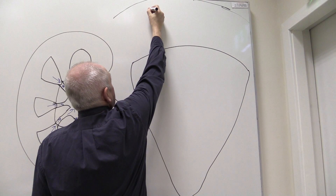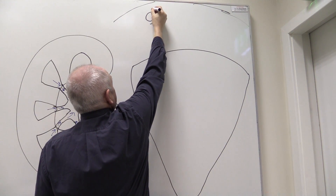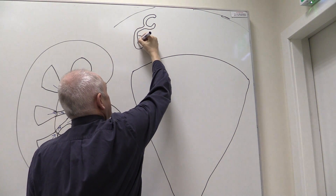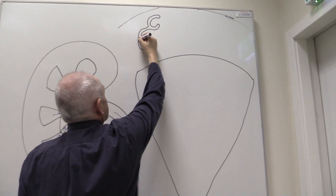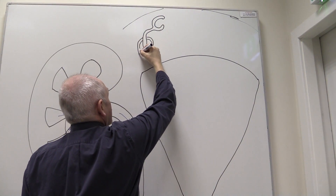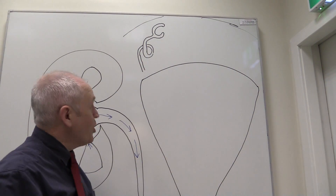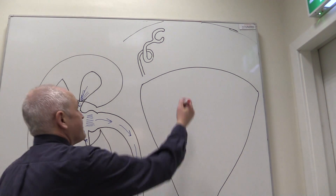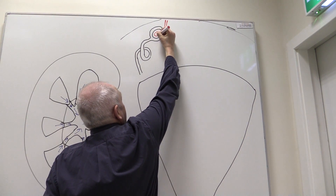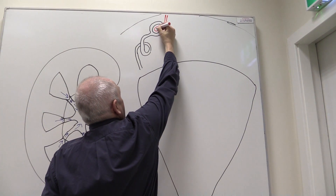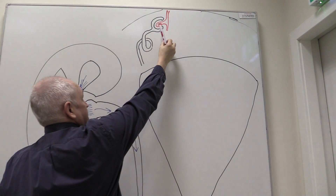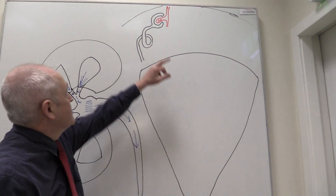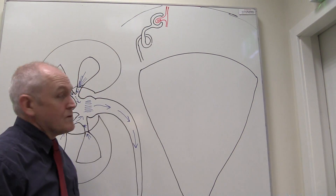Here we see a renal corpuscle, with the capsule — Bowman's capsule. Then there'll be a first convoluted tubule where the nephron loops around on itself to make it longer. The renal corpuscle consists of Bowman's capsule, and we also need a blood supply: there's an afferent arteriole going into the glomerulus and an efferent arteriole going out. The glomerulus is the ball of capillaries within Bowman's capsule, and collectively the glomerulus and the capsule are called a renal corpuscle.